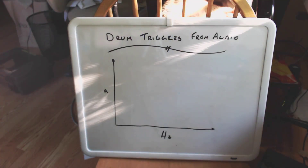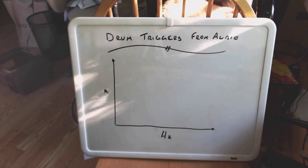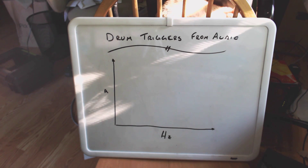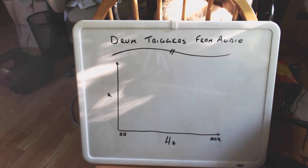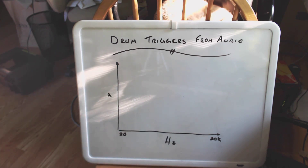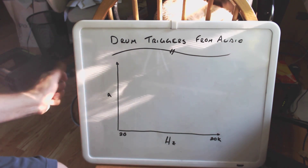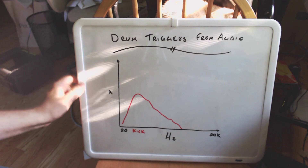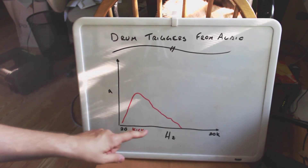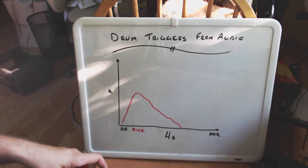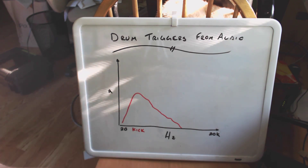The modern drum kit has evolved such that each component contributes to a specific frequency band, and what we can do is isolate these bands using bandpass filters. Consider your standard drum kit. First, the kick drum. If we look at the audible range from 20 to 20 kilohertz, the kick drum is going to take up a lot of low frequency data. Every time the kick drum hits, you get this low frequency thump — maybe a little bit of higher frequency content, but it's all going to be in this low frequency range.